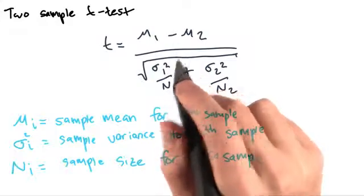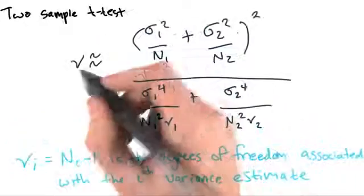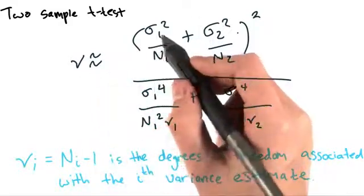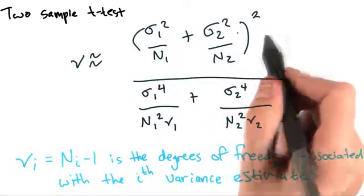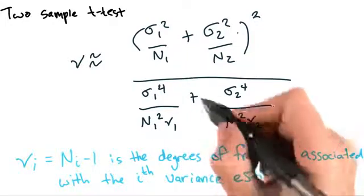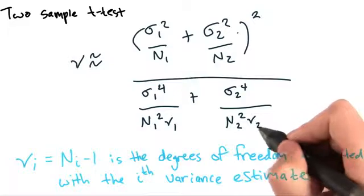We'll also want to estimate the number of degrees of freedom, nu, using the following equation. Nu is approximately equal to quantity sigma 1 squared over n1 plus sigma 2 squared over n2 squared over sigma 1 to the 4th over n1 squared nu 1 plus sigma 2 to the 4th over n2 squared nu 2.